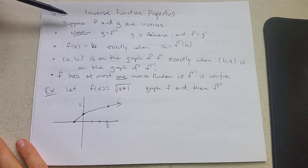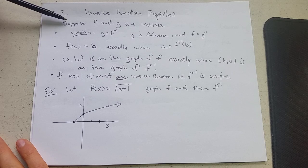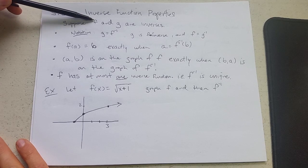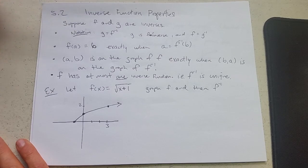Inverse function properties. Suppose we have two functions f and g and they are inverses of each other. So if f has an inverse then it's invertible. G has an inverse, it's invertible, so these are invertible functions.